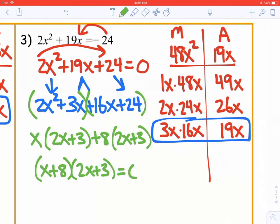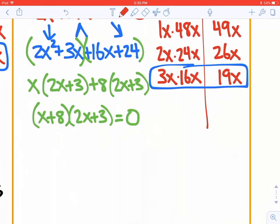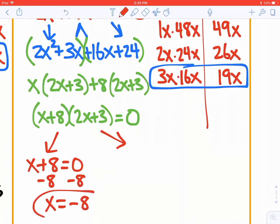Keep in mind, this is still equal to 0, so we need to finish solving by setting each one of our factors equal to 0. So x plus 8 equals 0. We could subtract 8, and x will equal negative 8 for one of our roots or zeros or solutions. Then 2x plus 3 equals 0.